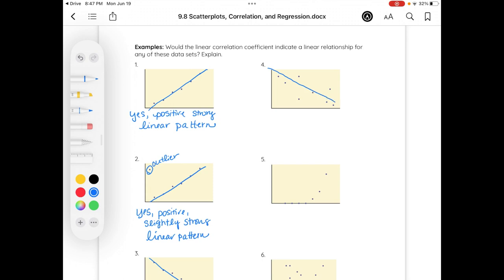Four is also negative, but notice the dots are a little further away. So I would say it's pretty weak or moderately strong, but it is negative. Negative, yes, negative, moderate, linear.